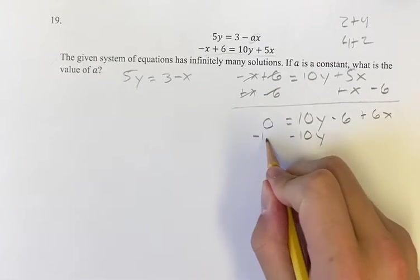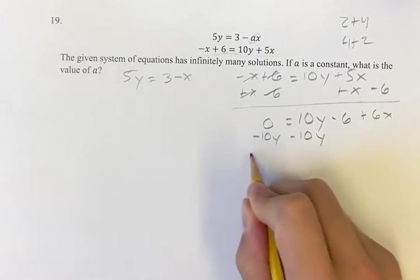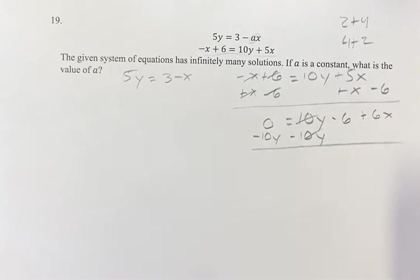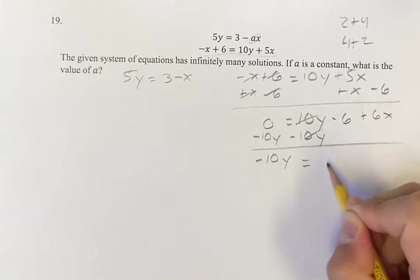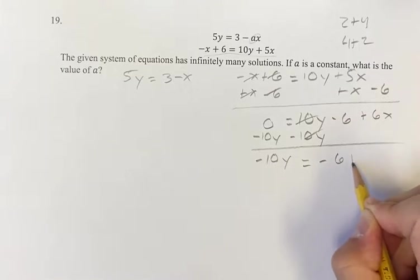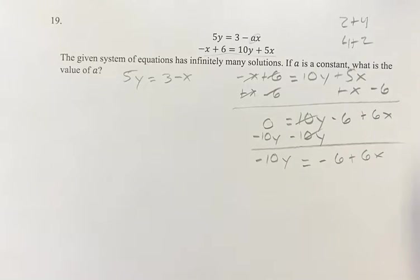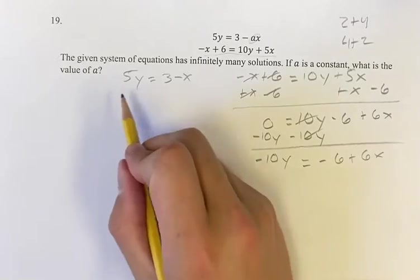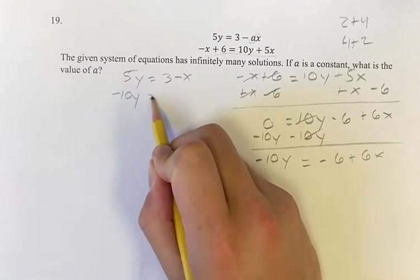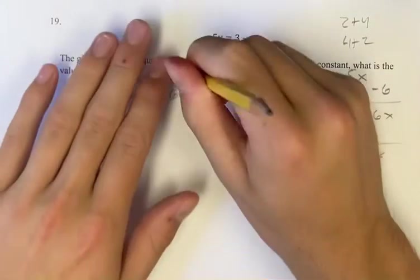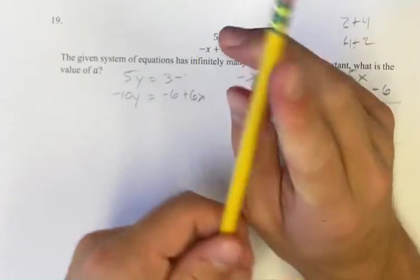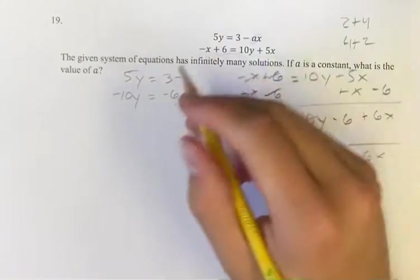So we have negative 10y minus 10y — these are canceling out. We have 0 minus 10y is negative 10y, is equal to negative 6 plus 6x. So now we have negative 10y is equal to negative 6 plus 6x. We actually need to keep that a in there — can't forget that.